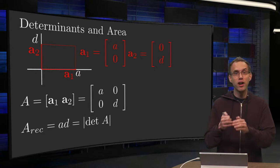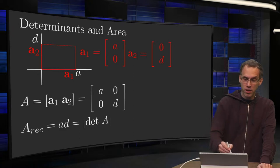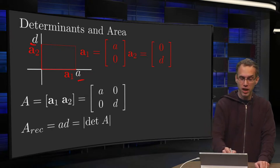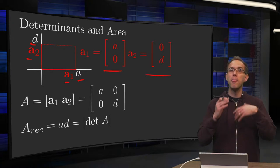So we will start with an easy example: a rectangle with sides up to a and up to d. We can form it using vectors a₁ and a₂, where a₁ is (a, 0) and a₂ is (0, d).